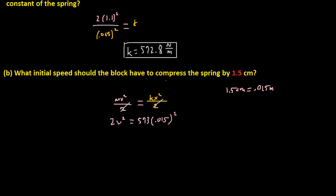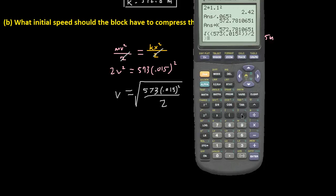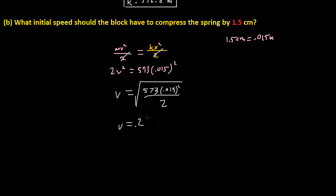Okay. So now we just solve for V, basically. So V is equal to the square root of 573 times 0.015 squared all over 2. Because if we divide by 2 on each side, and then we take the square root of it. So that's how I got that. So let's plug that into the calculator. So the second square root is 5. So 573 times 0.015 squared. So that's going to be our numerator divided by 2. It's going to be 0.254. So velocity equals 0.254 meters per second. And that's basically how you solve part B.